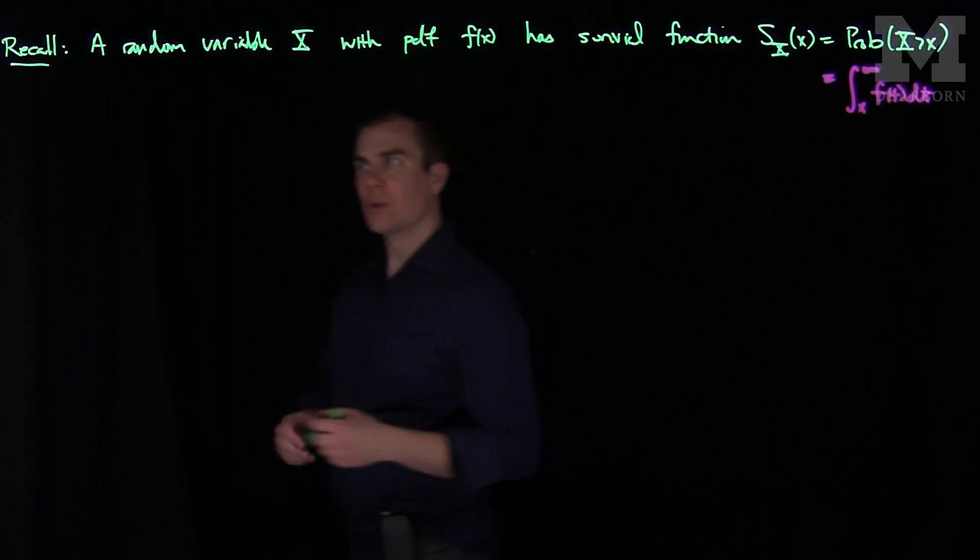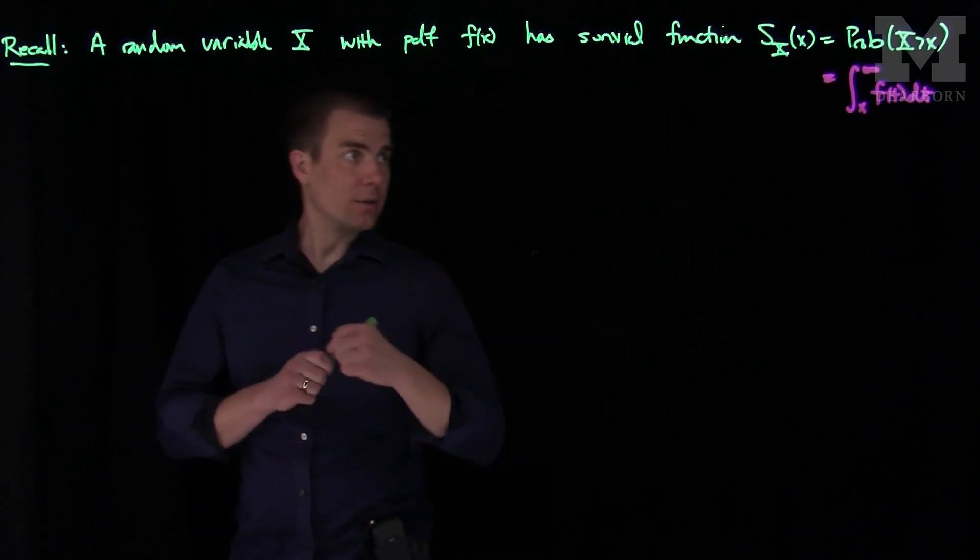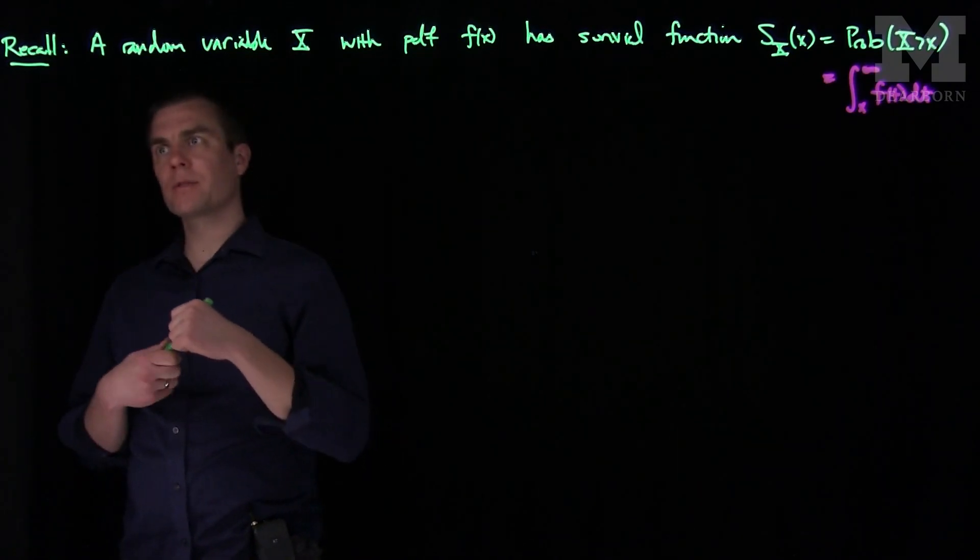Now, oftentimes what we should do is discretize this survival function. So there's two principle methods for doing this.